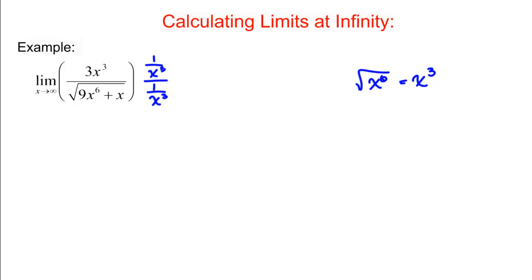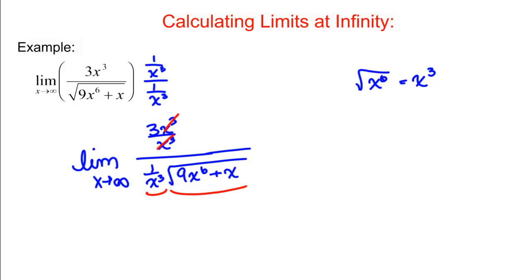So what we get when we do that is limit as X goes to infinity of 3X cubed over X cubed divided by 1 over X cubed times the square root of 9X to the 6th plus X. And now how we simplify the numerator algebraically is pretty straightforward. We're just going to cancel these X cubed. But on the denominator, it's kind of difficult to see how we would combine these algebraically.